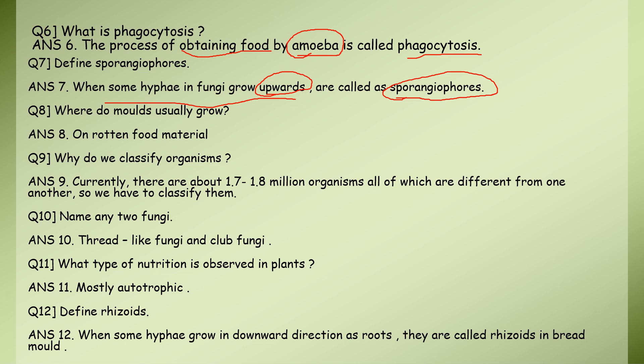Where do molds usually grow? Molds grow on rotten food material - food that has gone bad. You can see them as white layers on decaying food.